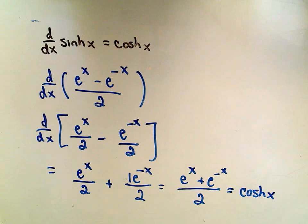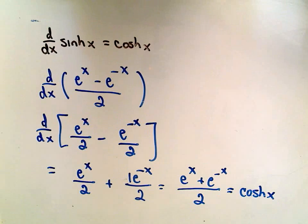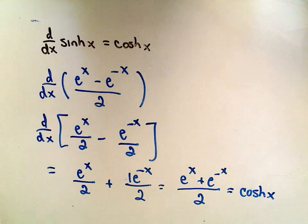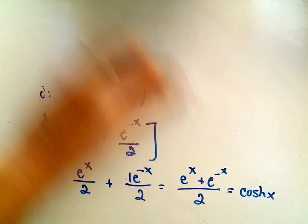So that's how you would justify any of these. Other than that, it's just using the product rule, the chain rule, the quotient rule — all the normal rules when you take derivatives.